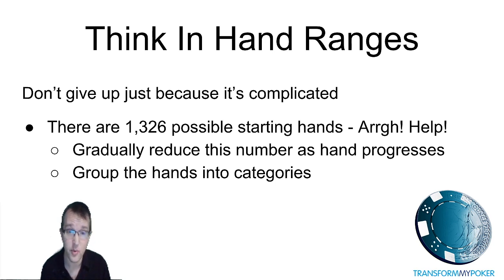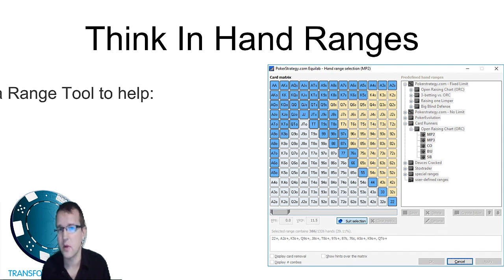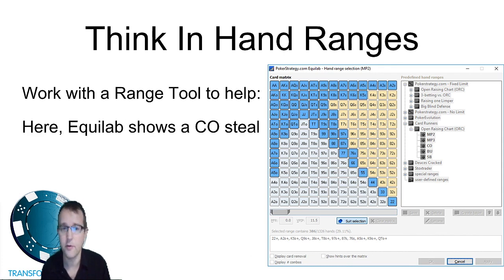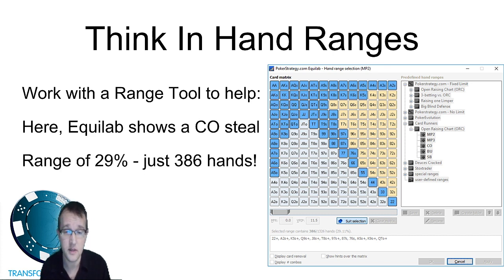The best thing to do is to just group the hands into categories. We're going to look at this in a minute on a slide how we might go about doing this. On this slide we're looking at Equilab which you can download for free from pokerstrategy.com and this helps with just standard ranges and equity. In this slide you can see a cutoff steal range of 29% and there's 386 hands in that range. So that would be our starting point pre-flop if somebody were raising from the cutoff and this is the hand range that we put them on. And then through the hand we would narrow down from there.